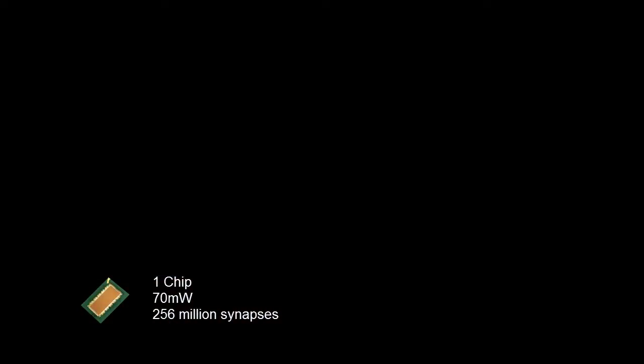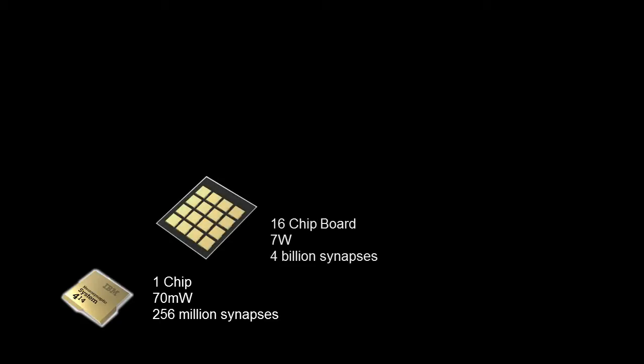This would be a very ideal platform to build a large-scale neural network and develop new applications. And this is not the end of the story. Looking far into the future: we have one chip with 256 million synapses, and putting 16 together creates 4 billion synapses. That 16-chip board consumes 7 watts of power — most of that consumed by FPGA, ARM processors, and network interfaces. TrueNorth itself consumes only one watt.